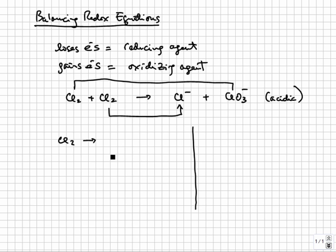We first split the reaction into two half-reactions. In one of them Cl2 goes to chlorate, in another one Cl2 goes to Cl minus, and we balance each one separately.